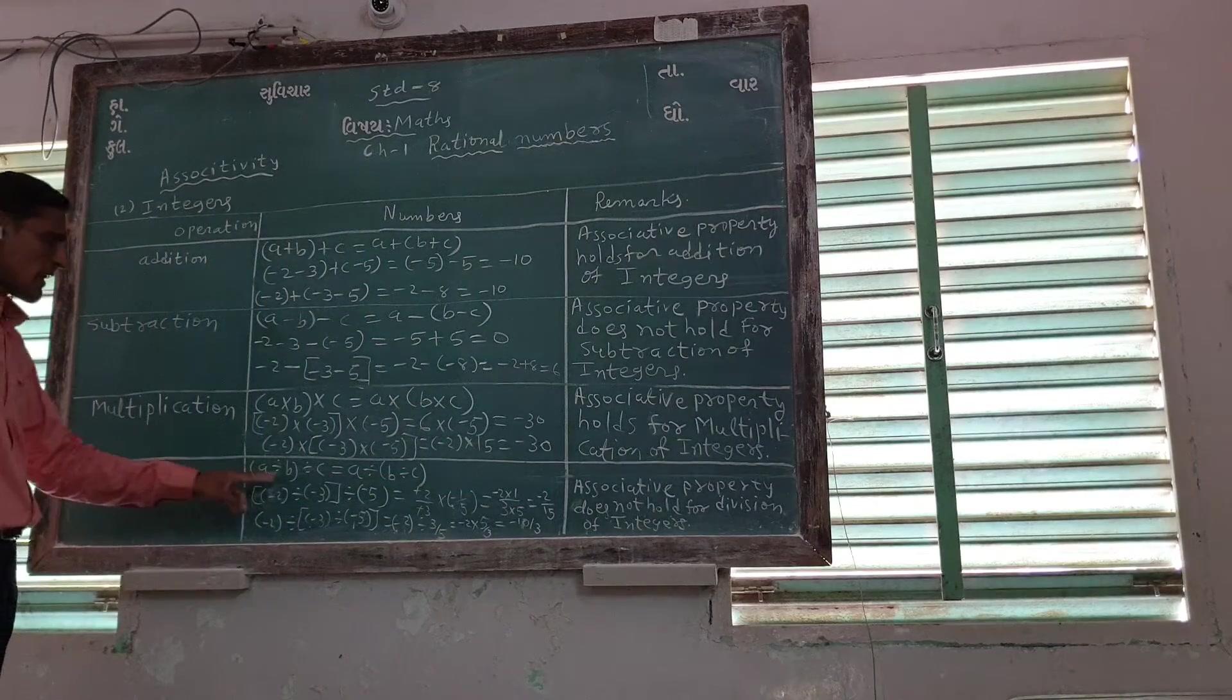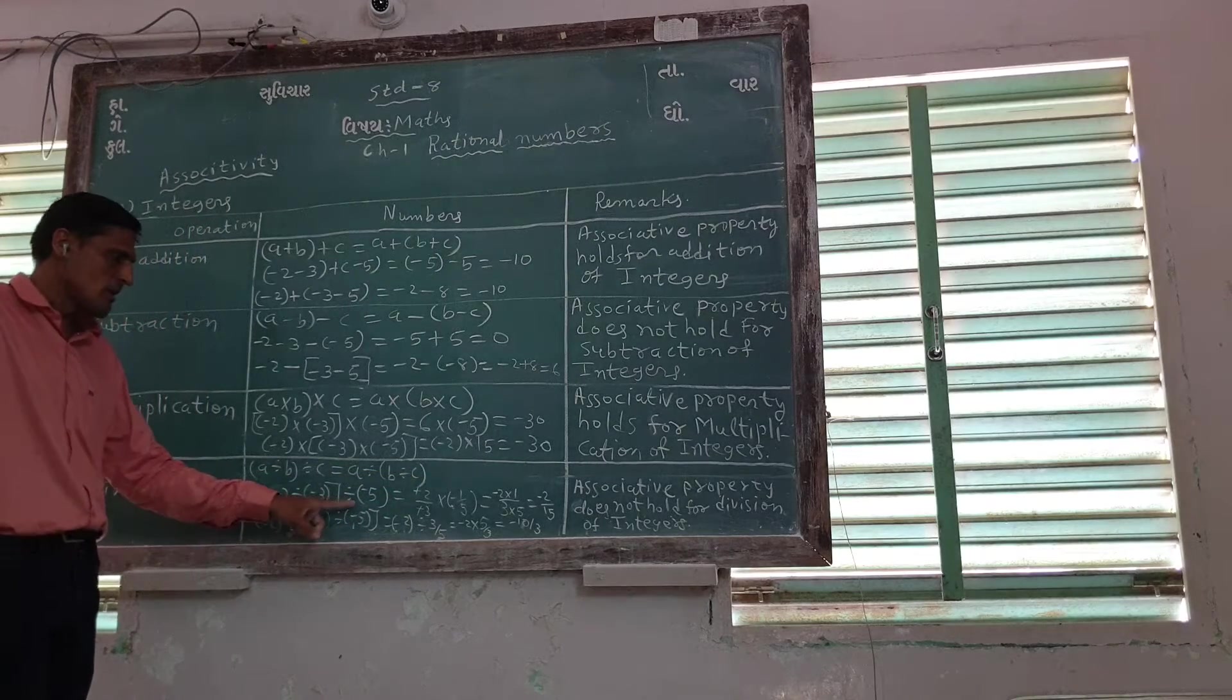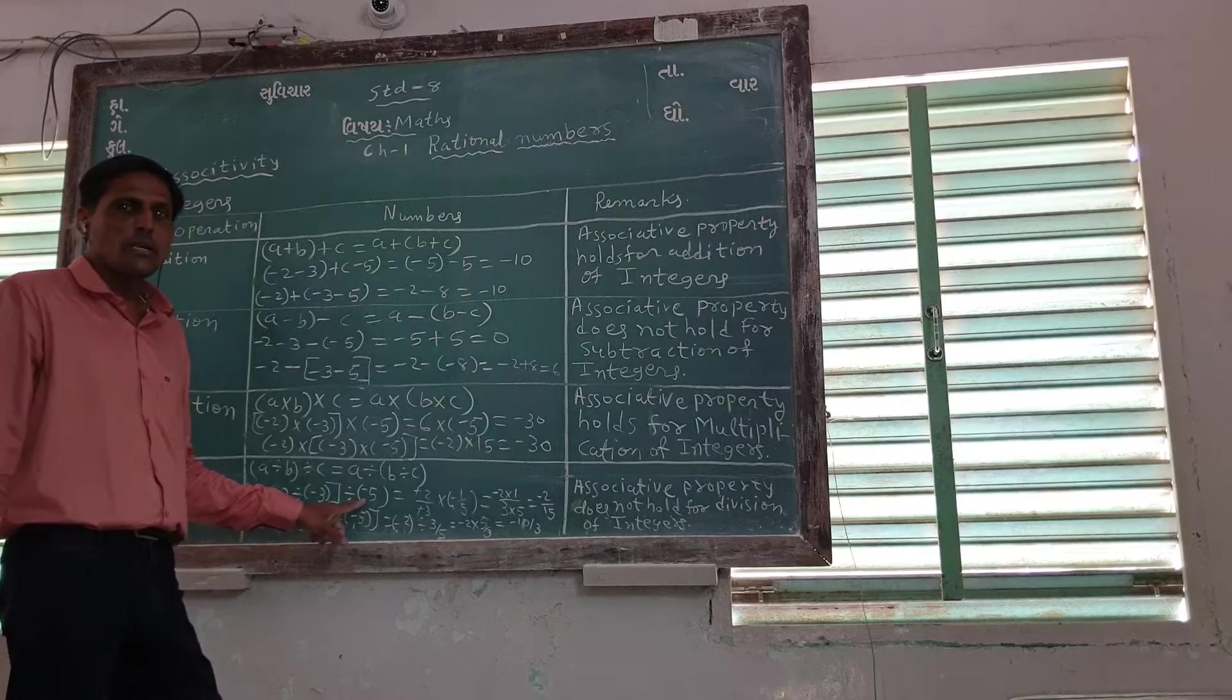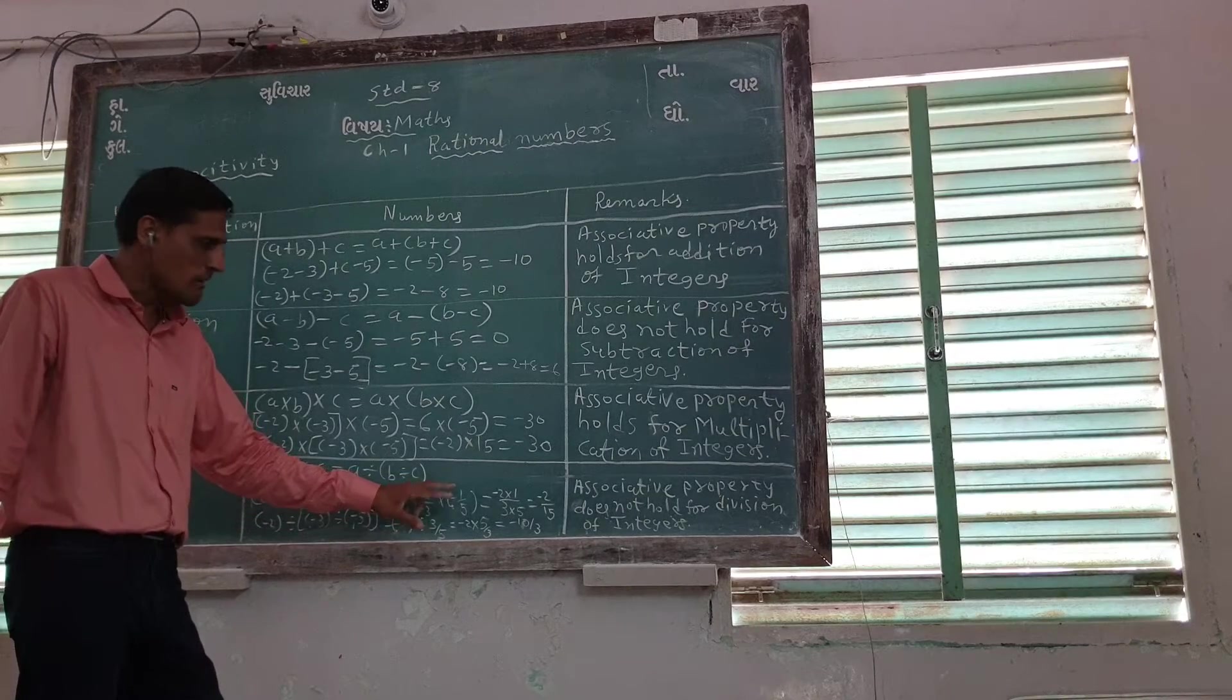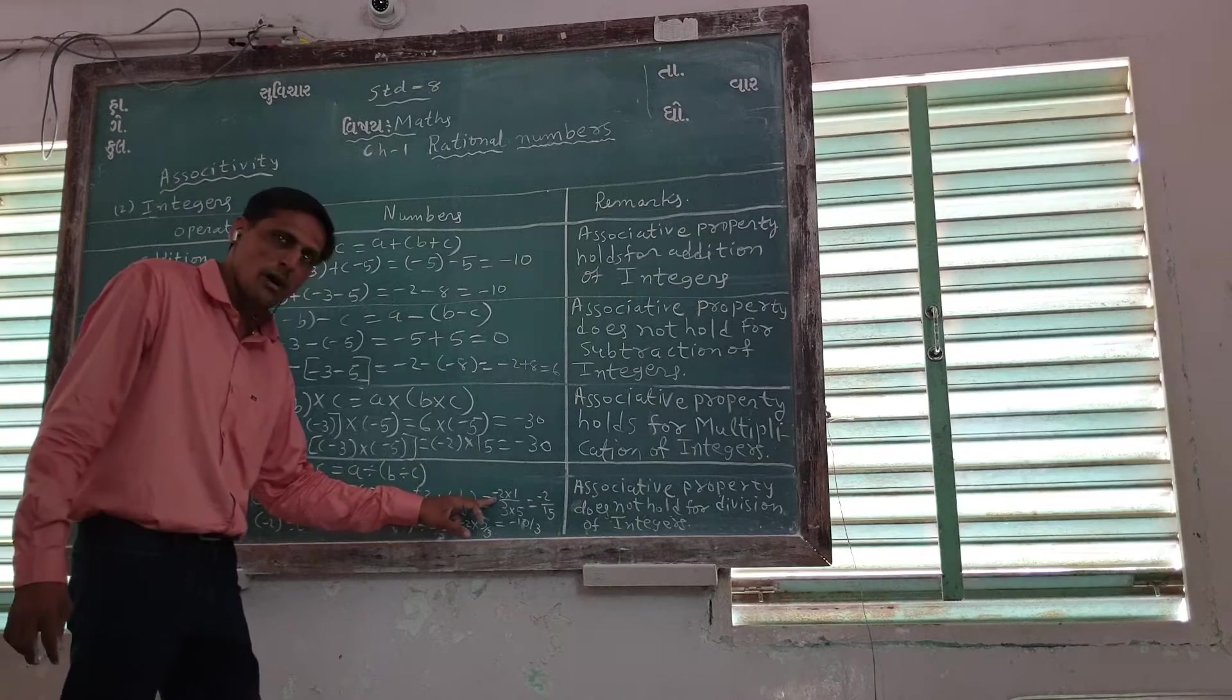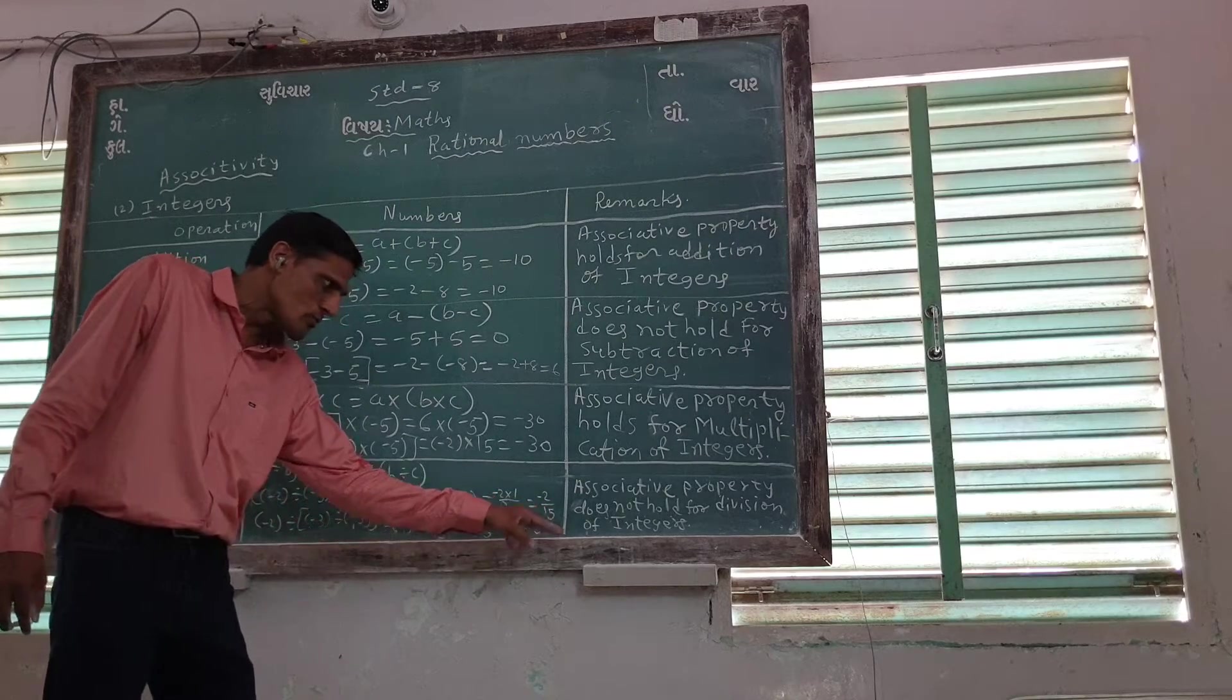Then being easier, A divided by 3 divided by C, that is equal to A divided by A divided by C. So minus 2 divided by minus 3 divided by minus 5. Minus 2 by 3 into 2 into minus 1, plus minus minus 1, so minus 2, so minus 2 by 15.